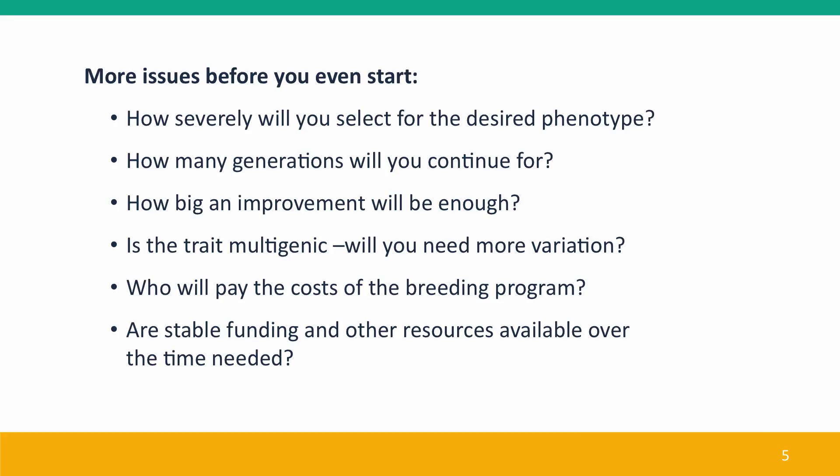There are still more issues. How severely are you going to select for the desired phenotype? Remember that selection risks creating inbreeding and eliminates genetic variation. How many generations will you do, and how big an improvement do you need? Is the trait multigenic — controlled by more than one gene? If so, you'll need more genetic variation. Most importantly, who's going to pay the costs? Strong selection, few generations, and small improvements reduce cost but also decrease the likelihood of success. Generation time matters a lot because it determines how long the program must run. This is why many long-term breeding programs are sponsored by governments — they're the only ones who can invest the long-view resources to keep a program going.